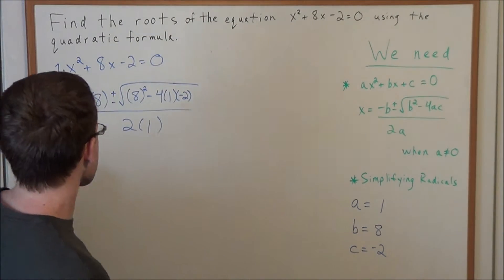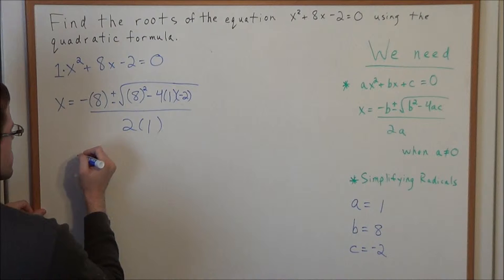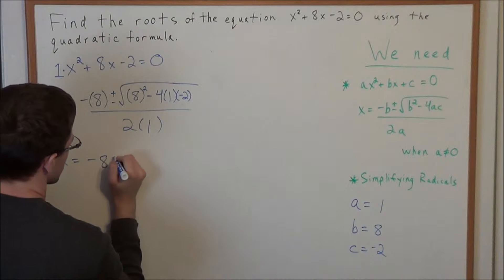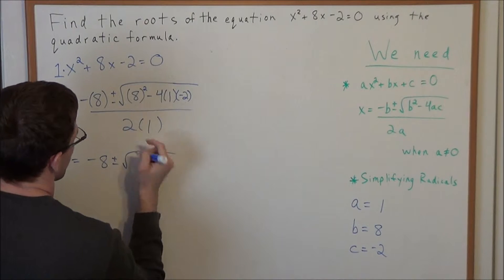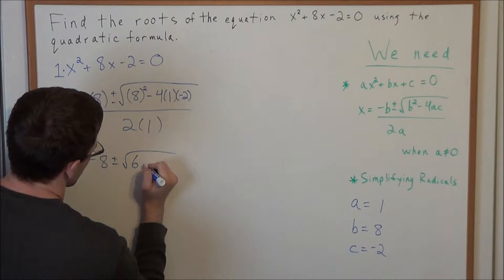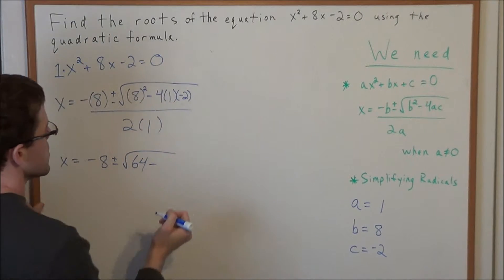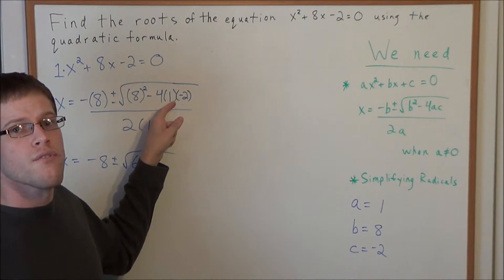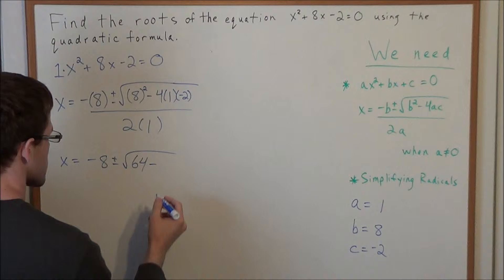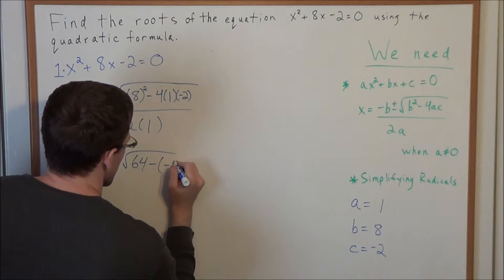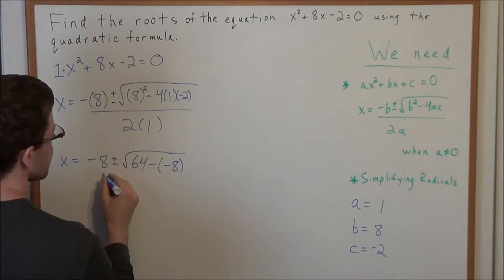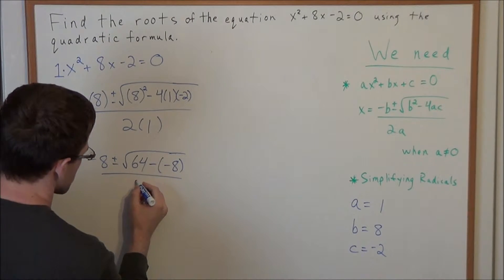Now we need to evaluate, or in other words, we need to simplify this. So we have x = -8 ± √(8²). Well, 8² is 64, minus 4 times 1 times -2. Well 4 times 1 is 4, 4 times -2 is -8. So now we have 64 - (-8), all divided by 2 times 1, which is 2.